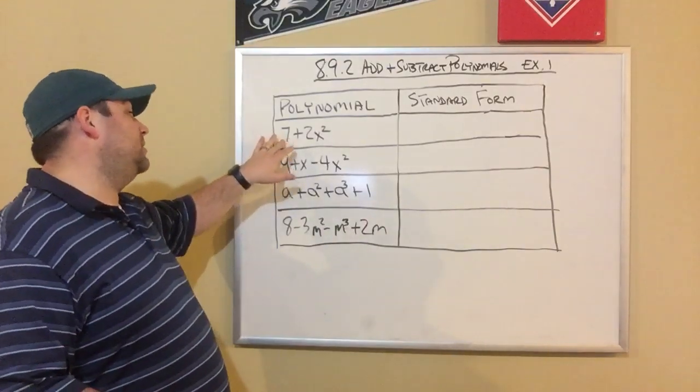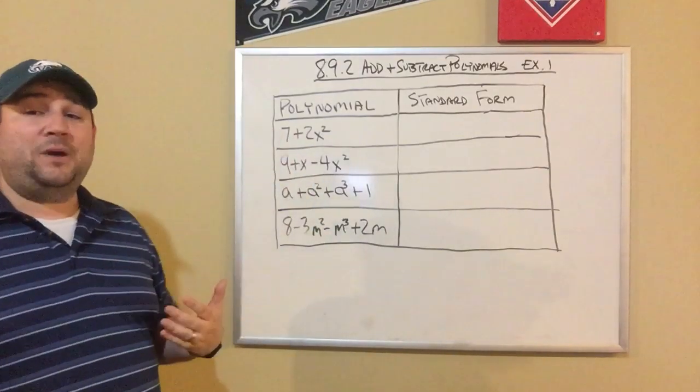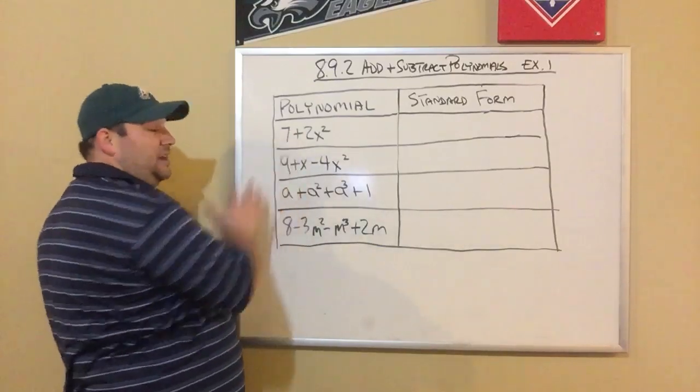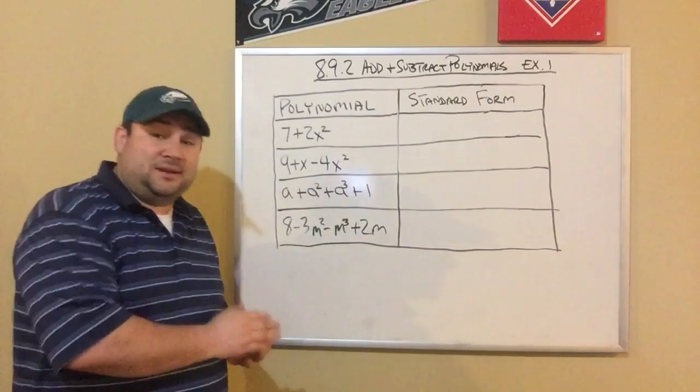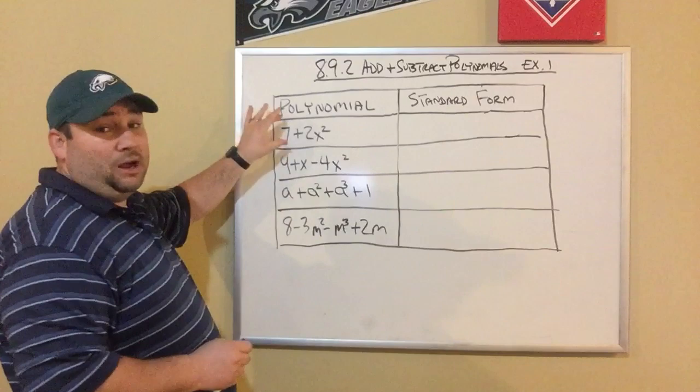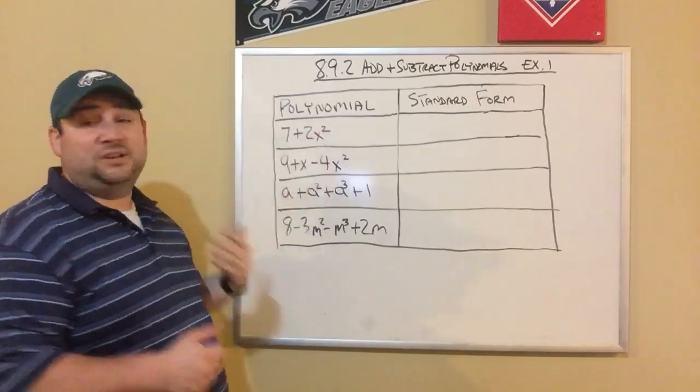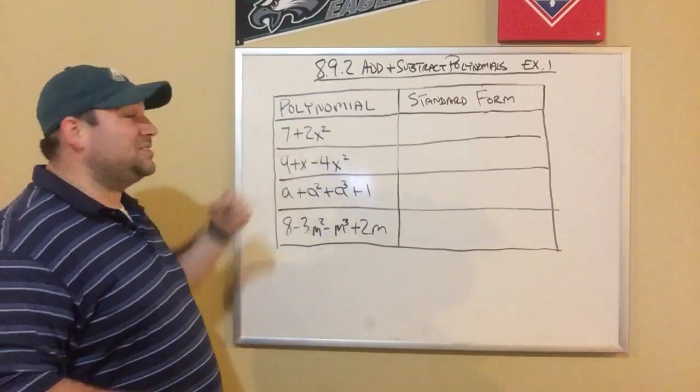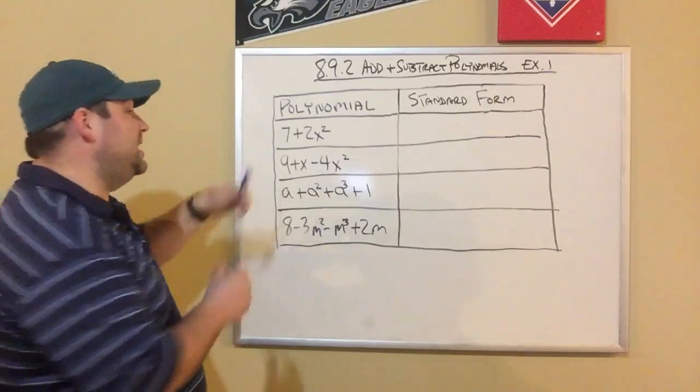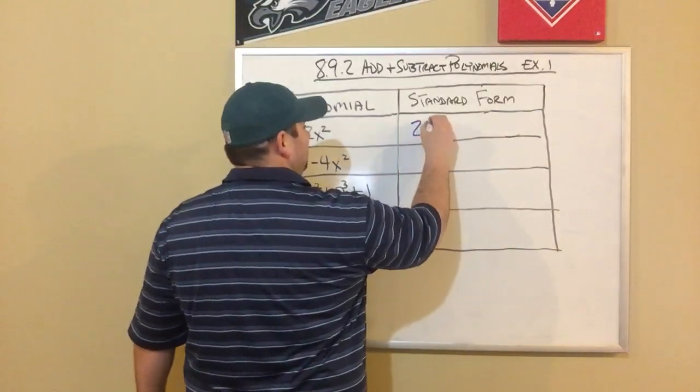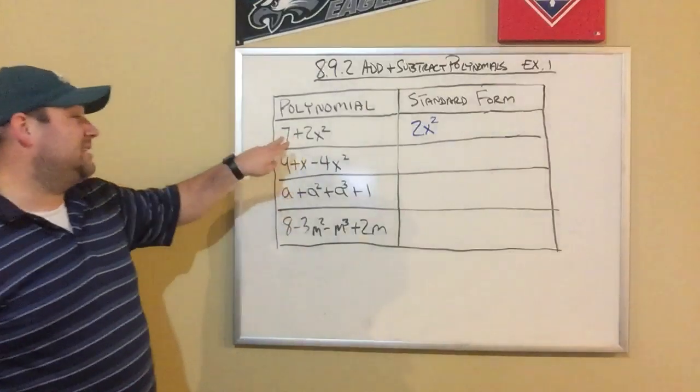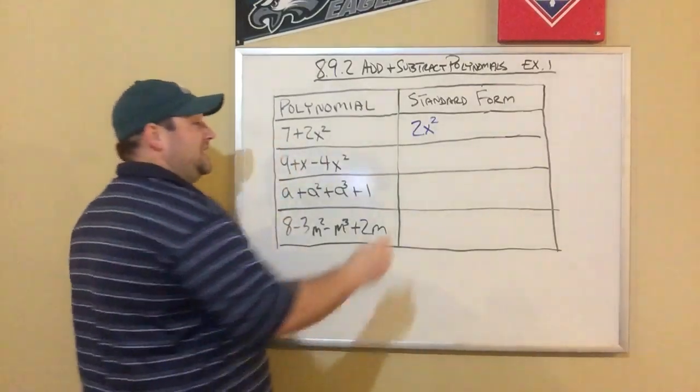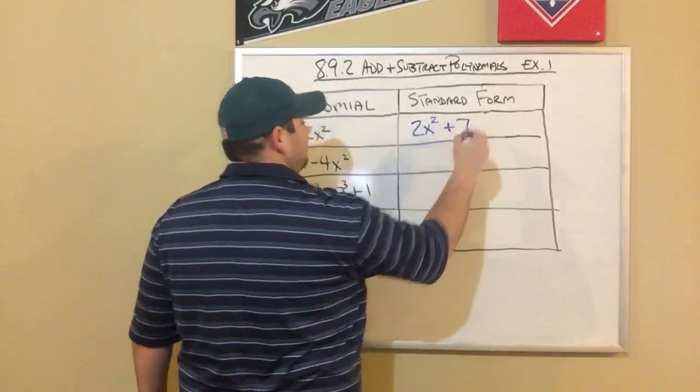So if I look at our first term here, 7 plus 2x squared, I look, 7 doesn't even have a variable at all. If you remember from yesterday's lesson, 7 has a degree of 0, while 2x squared has an exponent of 2, so a degree of 2. So that term needs to be first. So this answer in standard form would be, my first term would be 2x squared, my second term would be 7, since that's positive 7, I put plus 7.